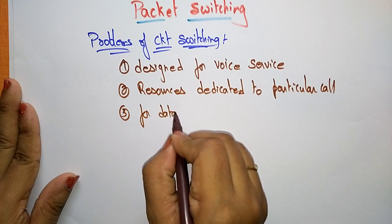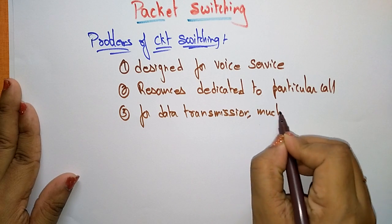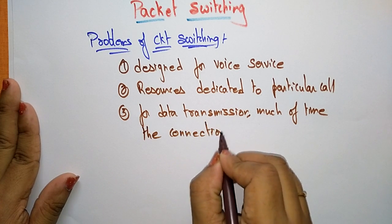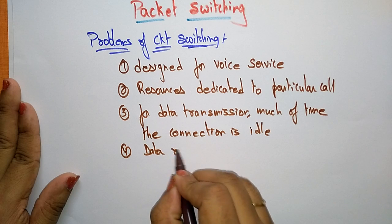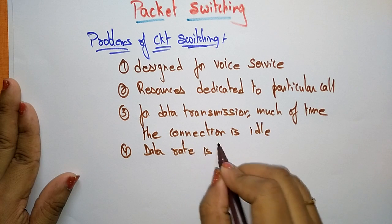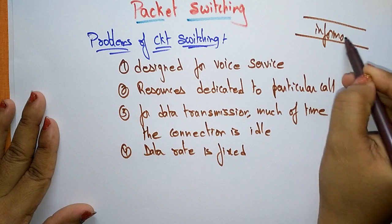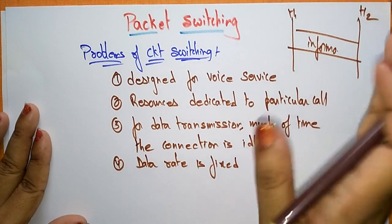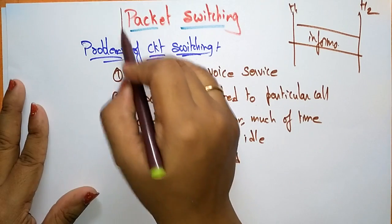For data transfer, much of the time the connection is idle. Also, in circuit switching the data rate is always fixed — whether it is a short or long message, at a time the information will be transferred from host 1 to host 2. So the packet switching is designed to address all these problems.